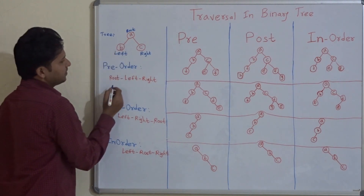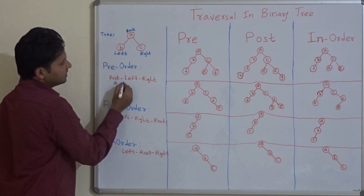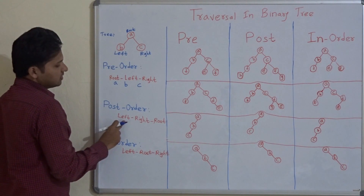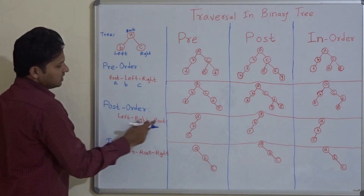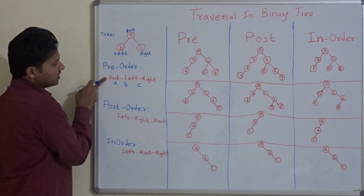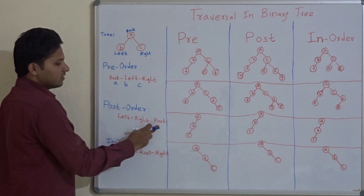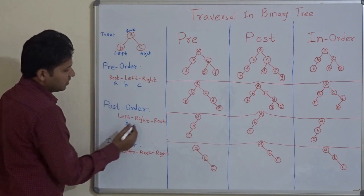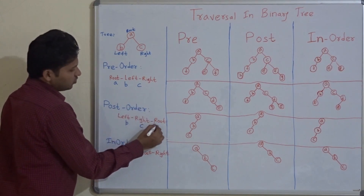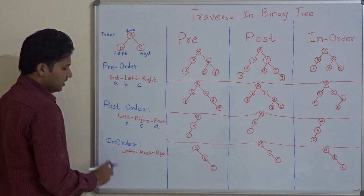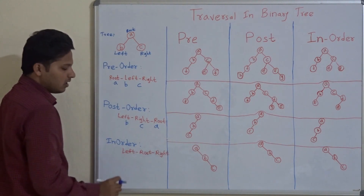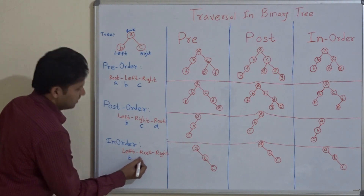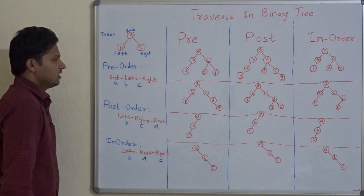The pre-order traversal of this tree will be A, then B (left), then C (right). For post-order traversal, it is left, right, then root. Notice the difference: in pre-order the root is taken first, and in post-order the root is taken last. So post-order gives B, C, A. For in-order traversal, the root is in the middle, so the traversal is left, root, right — giving B, A, C.